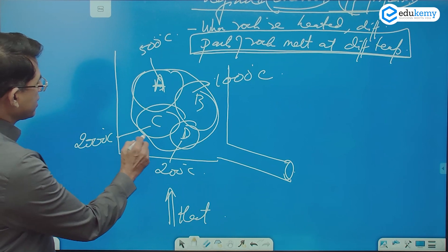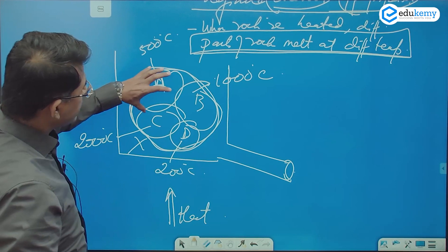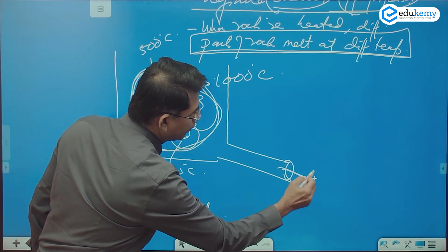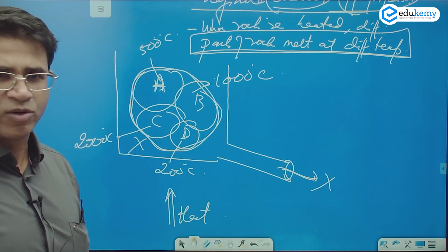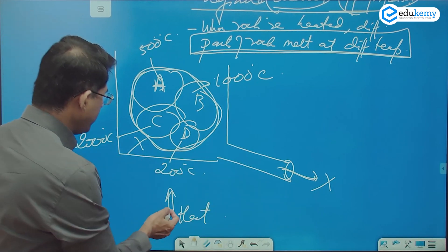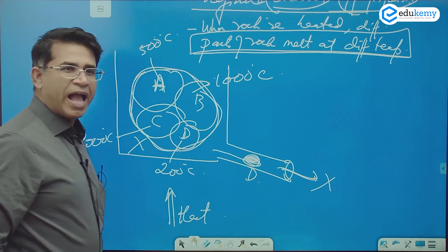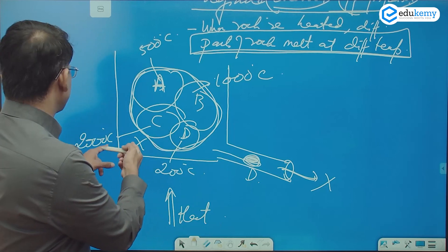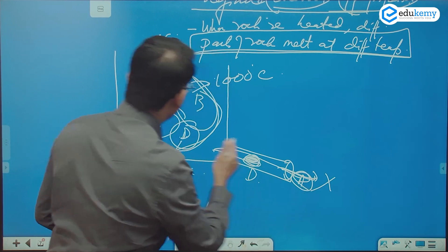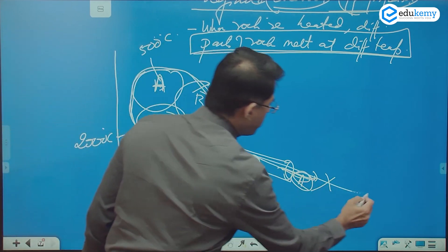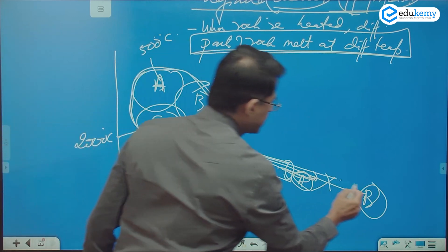Part D has a melting point of maybe 200°C. Say this entire mixture is called X. When you heat X, X does not come out as X. First, what comes out is substance D. As you heat more, substance A will come out. Heat more, then B will come out. Keep heating at very high temperatures, then C will come out.